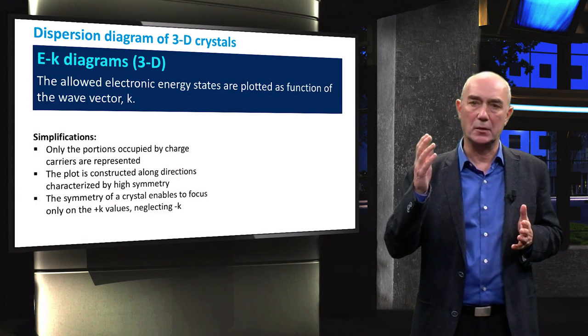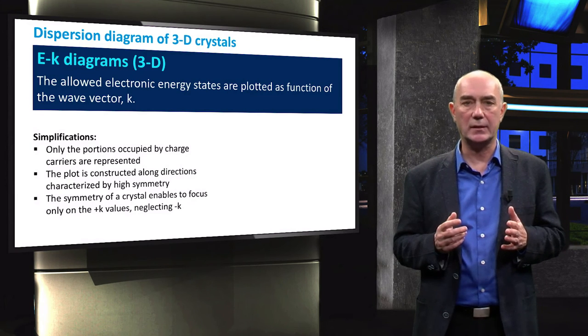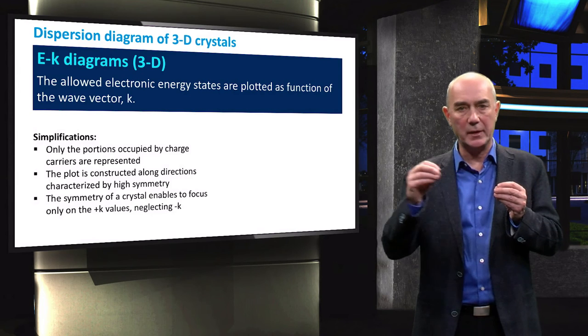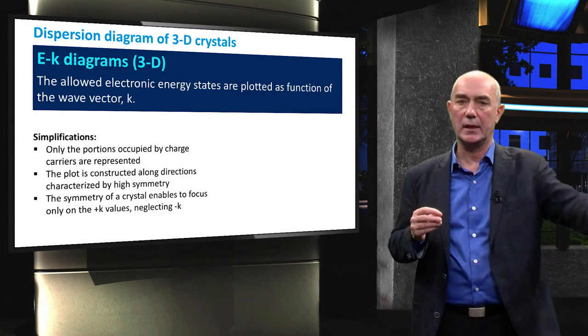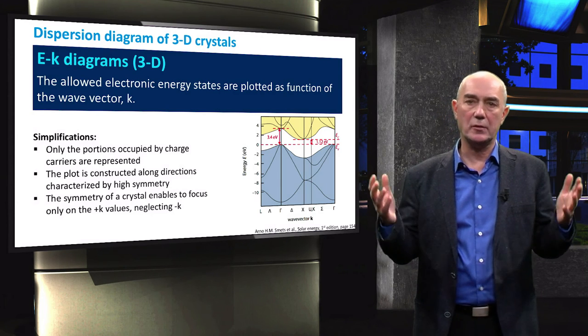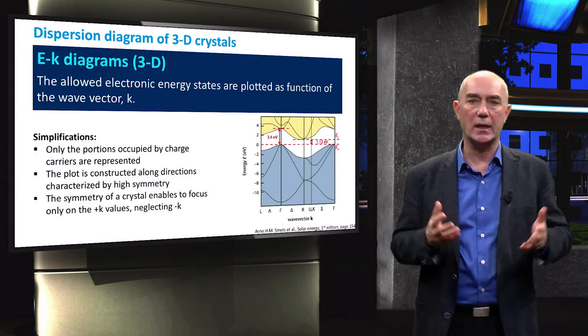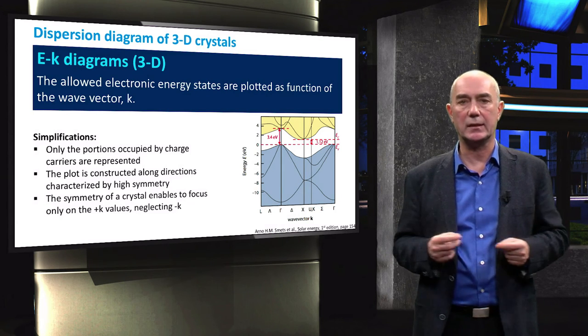It is important to realize that these energy levels vary depending on the orientation that is taken into account. This means that if we look at an electron in a crystal lattice, it will be able to propagate differently in different directions. Here you can see how the dispersion diagram looks like for silicon crystal.